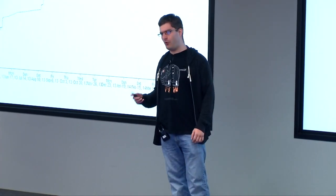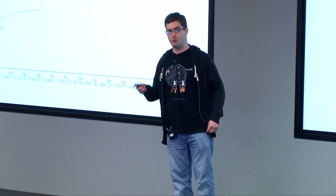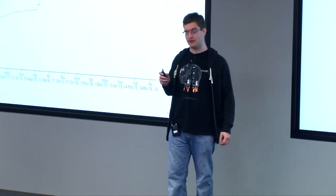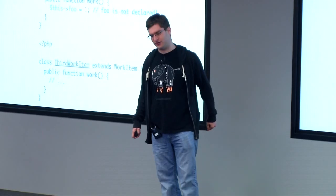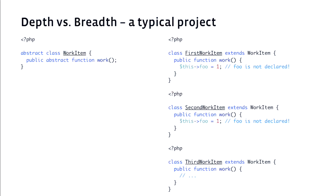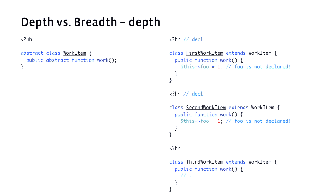Now I'm going to go into one important detail of the way the Hackificator converts your code that wasn't apparent to us when we did this conversion but turned out to be really important. Consider a typical PHP project with four files: a superclass WorkItem along with three subclasses — FirstWorkItem, SecondWorkItem, and ThirdWorkItem, all starting in PHP. FirstWorkItem and SecondWorkItem have the problem of using an undeclared member variable, so they're not going to convert cleanly into Hack partial. ThirdWorkItem and WorkItem itself have no problems. The question is: how do you convert these four files?